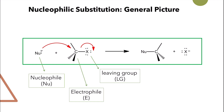It's simply a substitution reaction. The general picture of this kind of reaction: you must have a nucleophile, and a nucleophile is any species or compound that is a source of electrons. This source can either be through a negative charge or simply a lone pair of electrons. Then you have your substrate where the reaction will take place, and the substrate must have a polar bond.